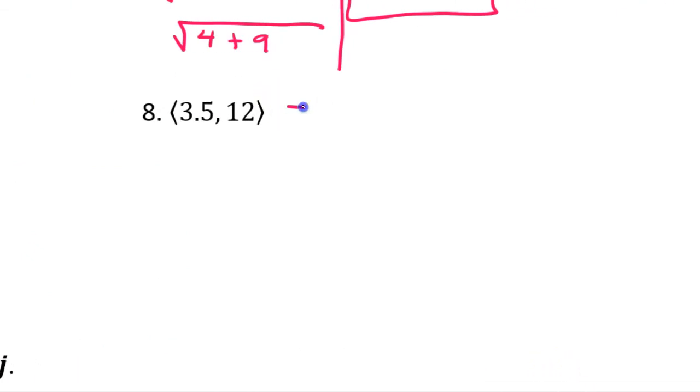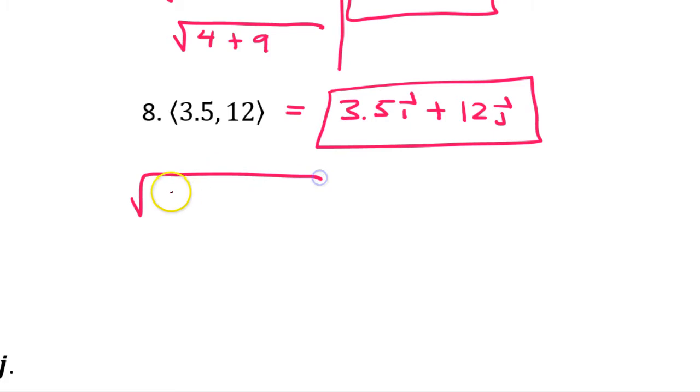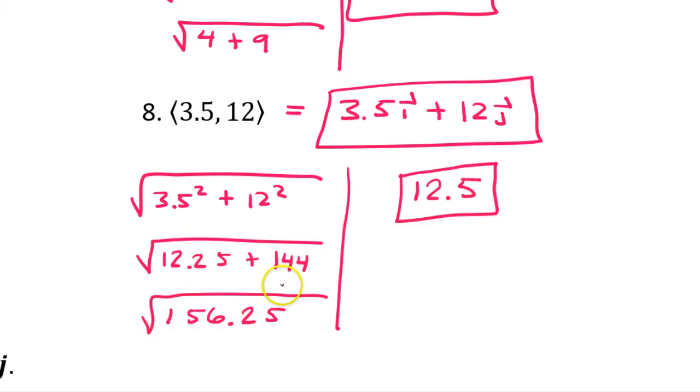Number 8. In unit vector form, this would be 3.5i plus 12j. Now, for the magnitude, the square root of 3.5 squared plus 12 squared. I had to use my 4 function calculator a little bit. 3.5 squared was 12.25. Add those up, you get 156.25. Take the square root of that, it's 12.5.